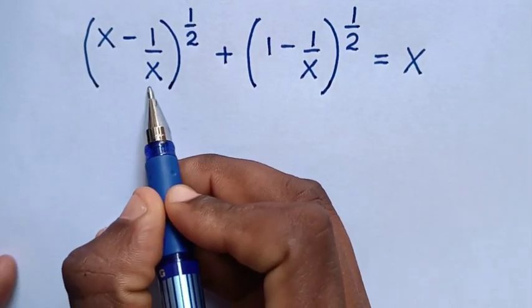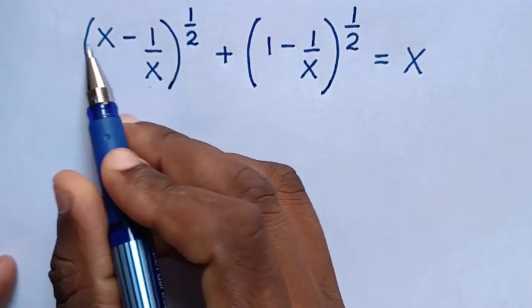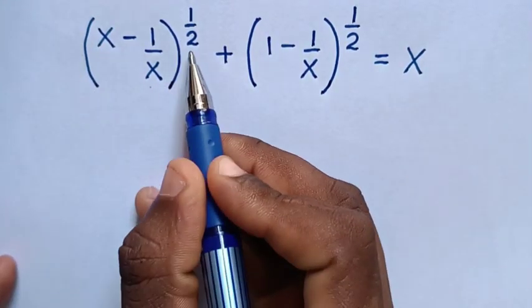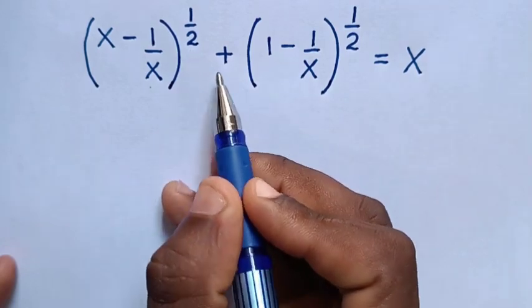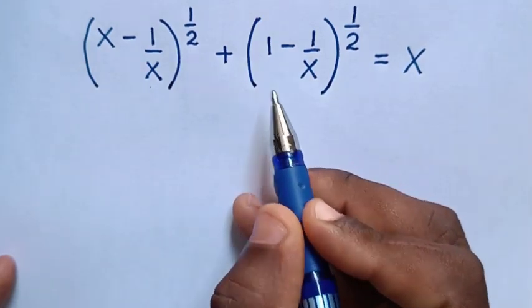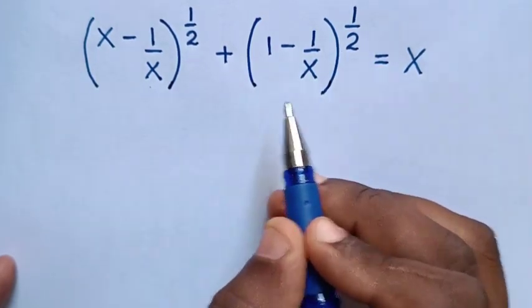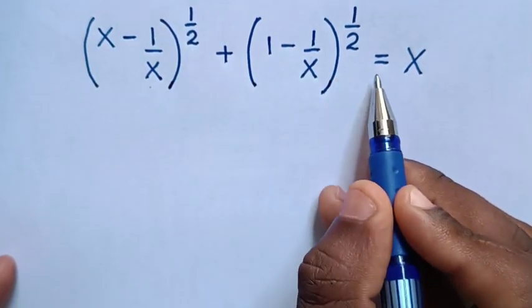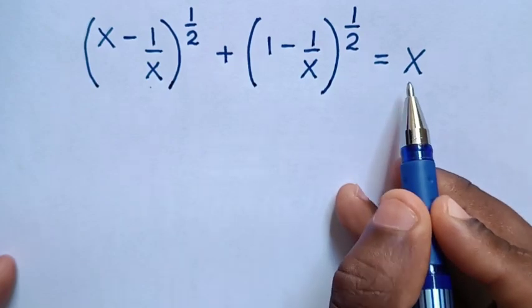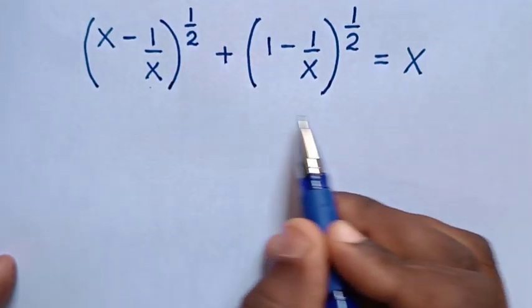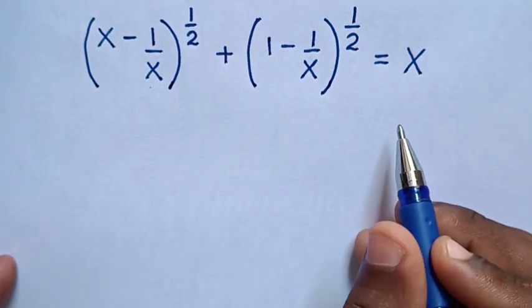How to solve: (x minus 1 over x) to the power of a half, plus (1 minus 1 over x) to the power of a half, is equal to x. Find the value of x from this equation.